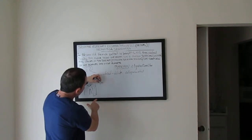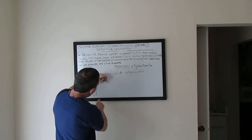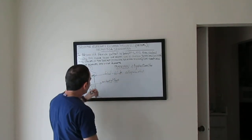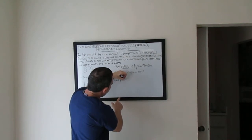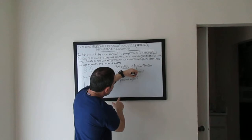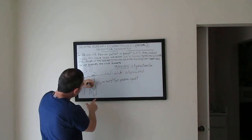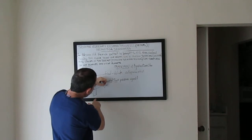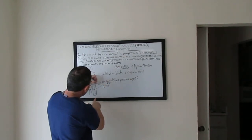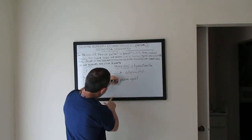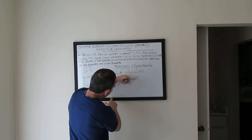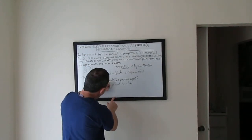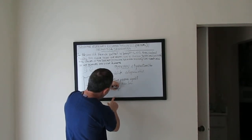For example, in endometrial tissue, tamoxifen has partial agonist effects. And in bone tissue, it also acts as an agonist — it prevents bone loss and prevents osteoporosis.